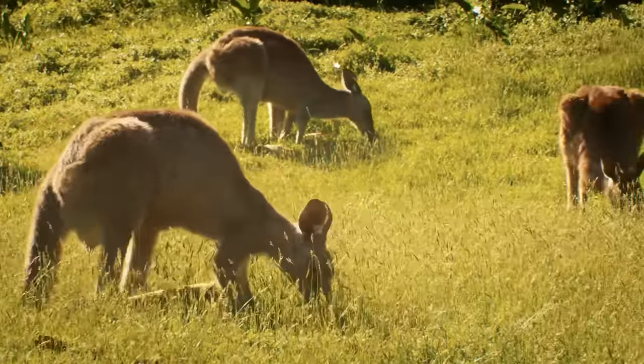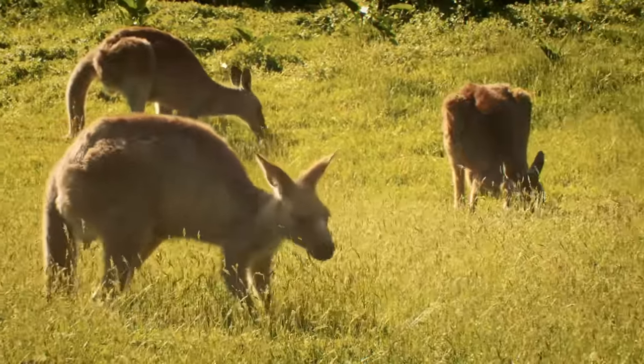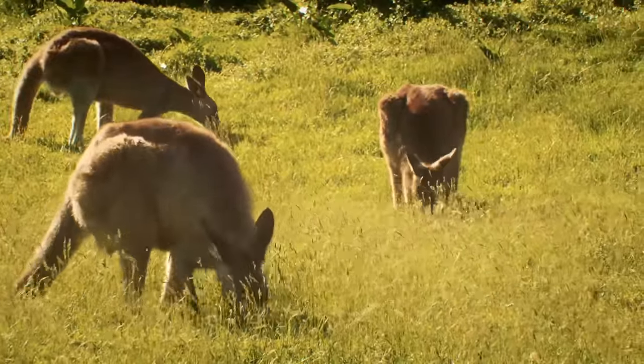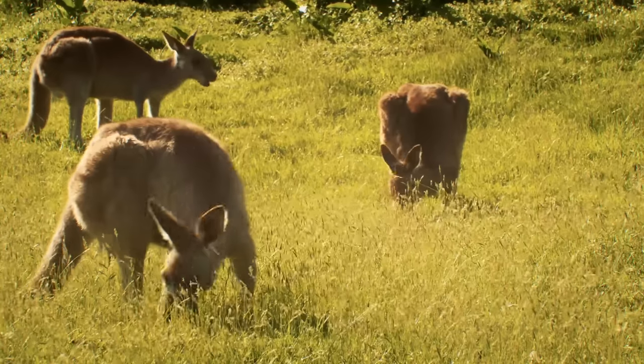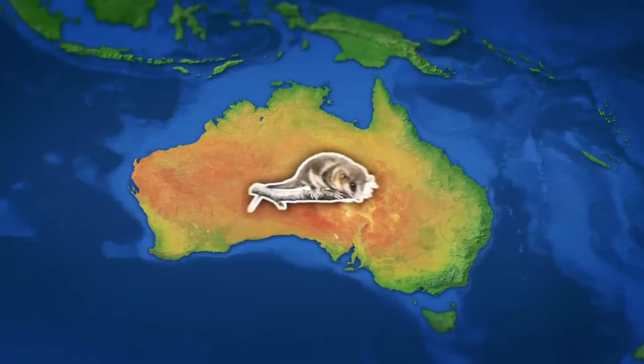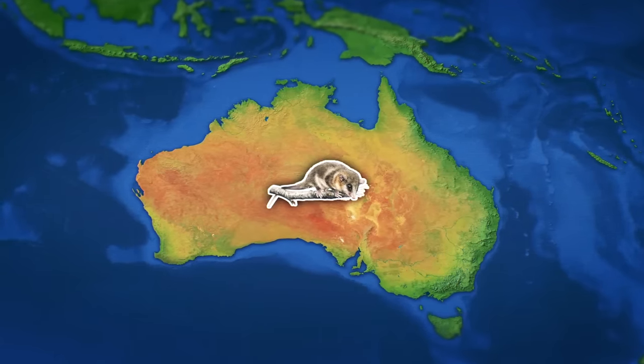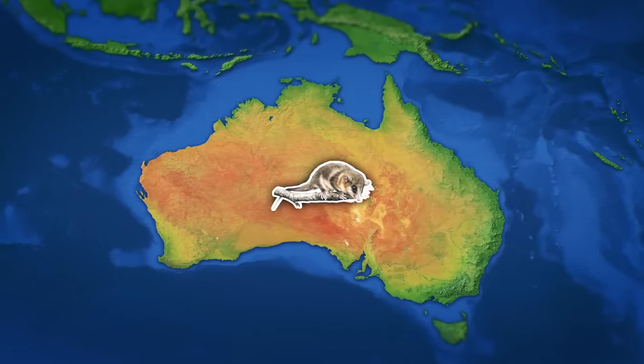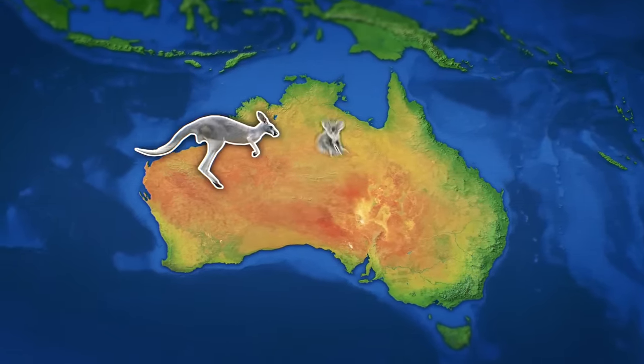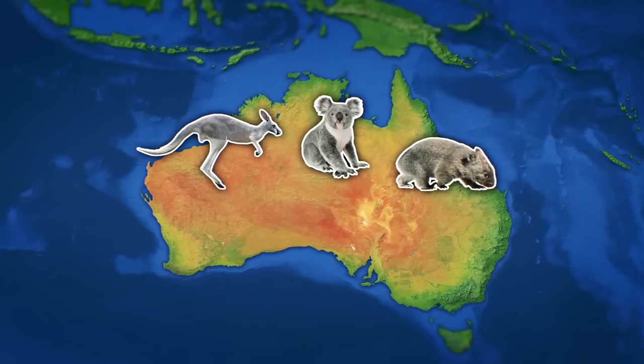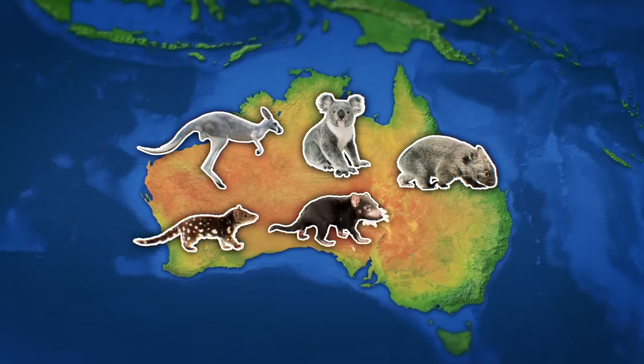Without any mammalian competition, marsupials had finally found the one place where they could become the dominant animals of the realm. This dominance allowed the single ancestral species to diversify into a variety of forms and functions, with herbivores like kangaroos, koalas, and wombats, and carnivores like quolls, Tasmanian devils, and thylacines.